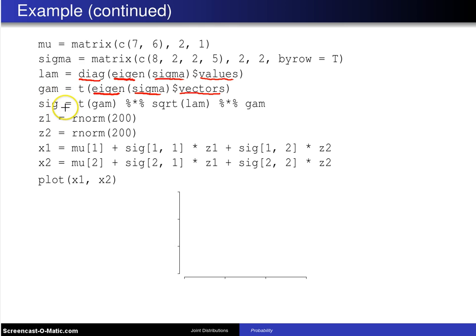So finally, to get a sig array and this is what we called sigma 1 half earlier. You take the transpose of gamma multiplied, and this is a matrix multiply, by the square root of the lambda matrix and another matrix multiply of gamma. And that will give you the sig matrix which is going to show up here and here.